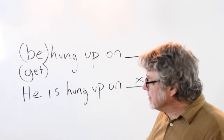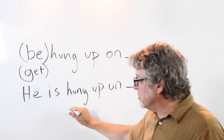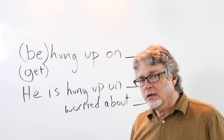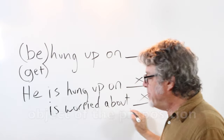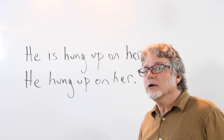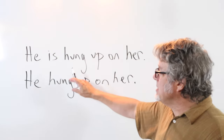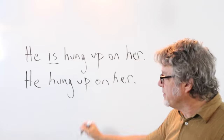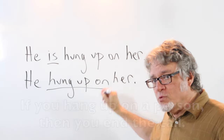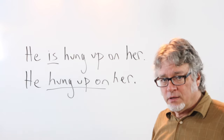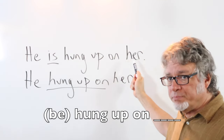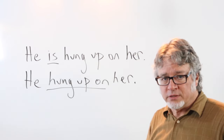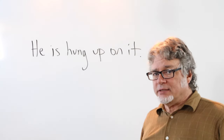This is not action. It is similar to 'worried about' and then the thing he is worried about — the object. Look at the difference between these two sentences: 'He is hung up on her' — with the verb 'be' — versus 'He hung up on her,' which is used for phones. If you hang up on a person, you end the call. If you are hung up on something or a person, you are thinking about it all the time or worried about it all the time.